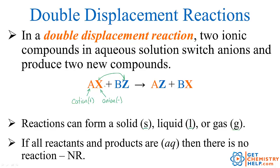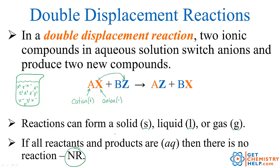Now if everything winds up still aqueous — if all of the reactants are still aqueous and all the products are still aqueous — then really nothing happened. Let's imagine we have a beaker and we mix together AX and BZ. They're soluble, so we've got A cations, X anions, B cations, and Z anions all swimming around. If once the reaction is done they're still just swimming around, and no solid, no liquid, and no gas is formed, then really nothing happened. The ions all just dissolved, but there was no new chemical compound made. So instead we would just write NR.